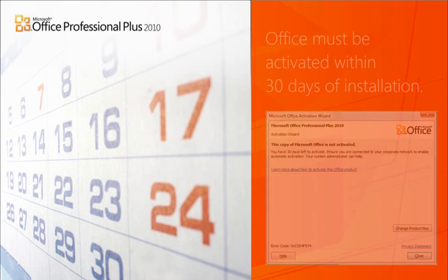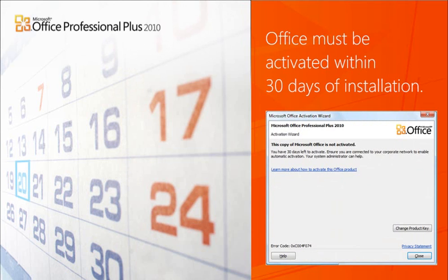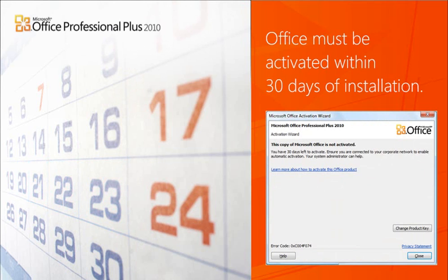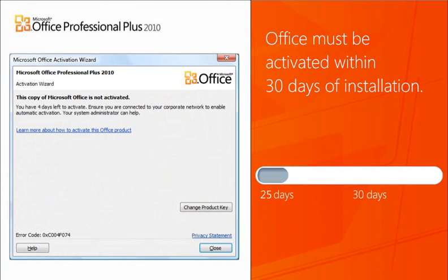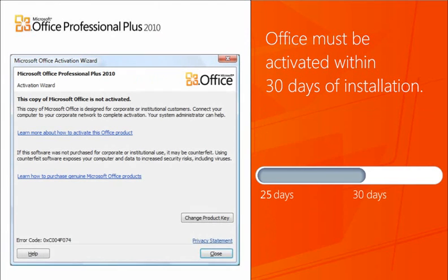Office 2010 client products must be activated within 30 days of installation. If they are not activated, users will get a series of notifications. Furthermore, in the case of KMS, computers will automatically reactivate with the KMS host at least once in every 180 days. Unactivated machines have 24 days of use before prompts start to appear. From day 25 to 30, you'll get pop-up notifications asking you to activate. After 30 days, unactivated PCs will display an unlicensed notification whenever an Office application is launched.